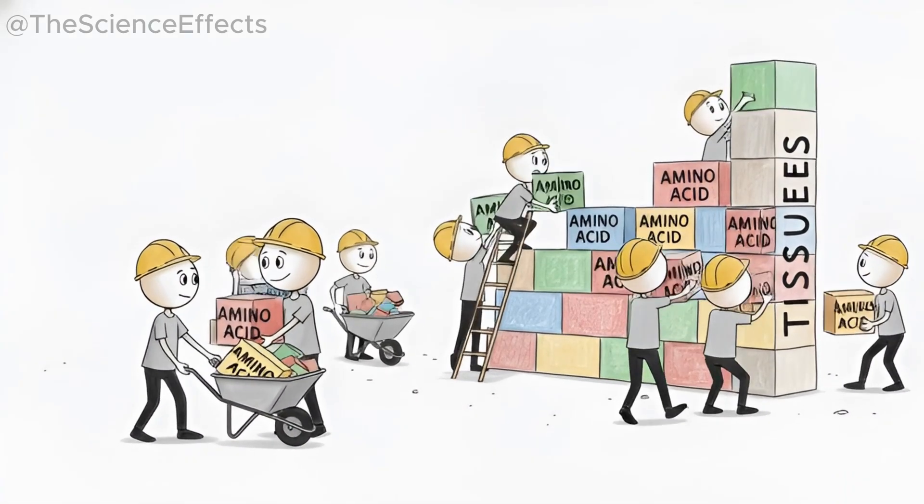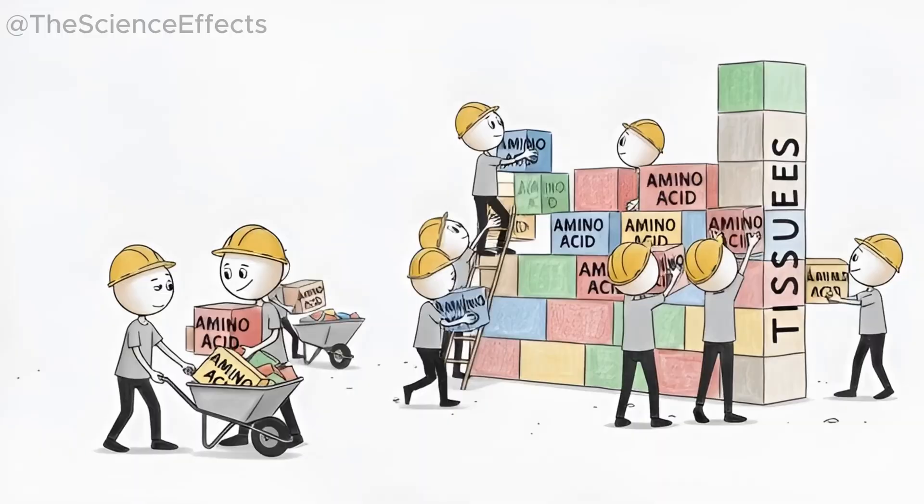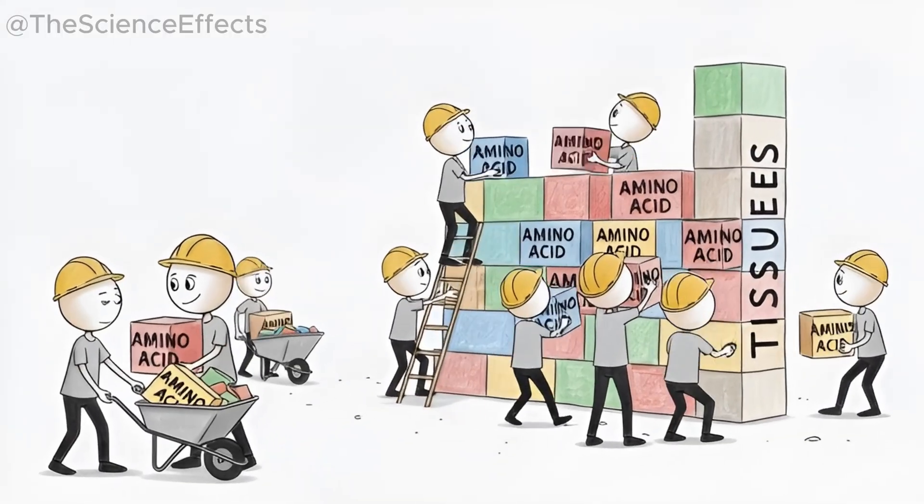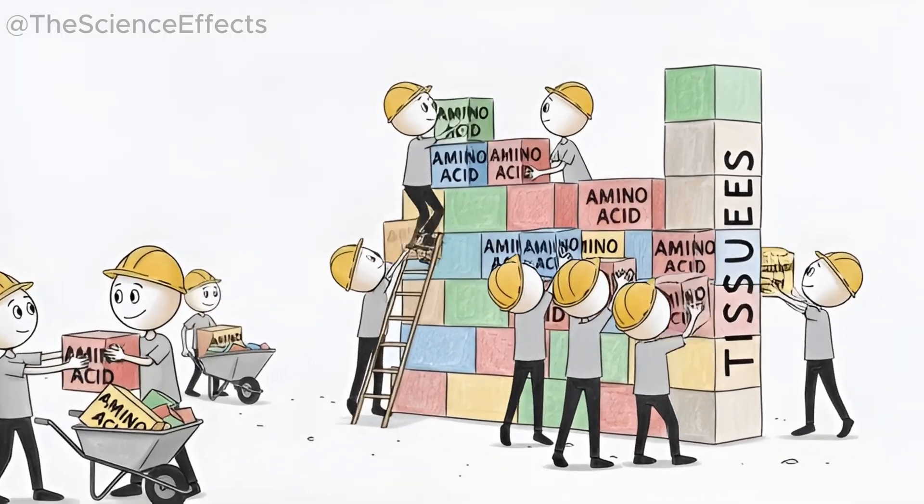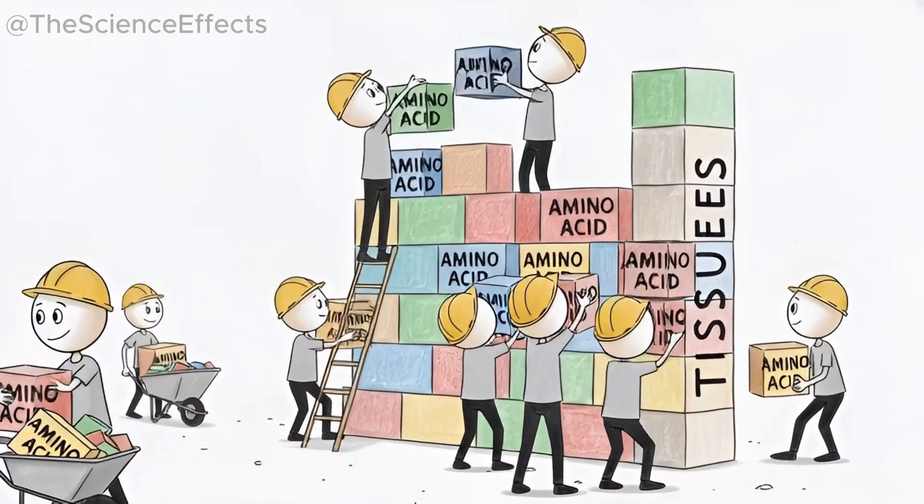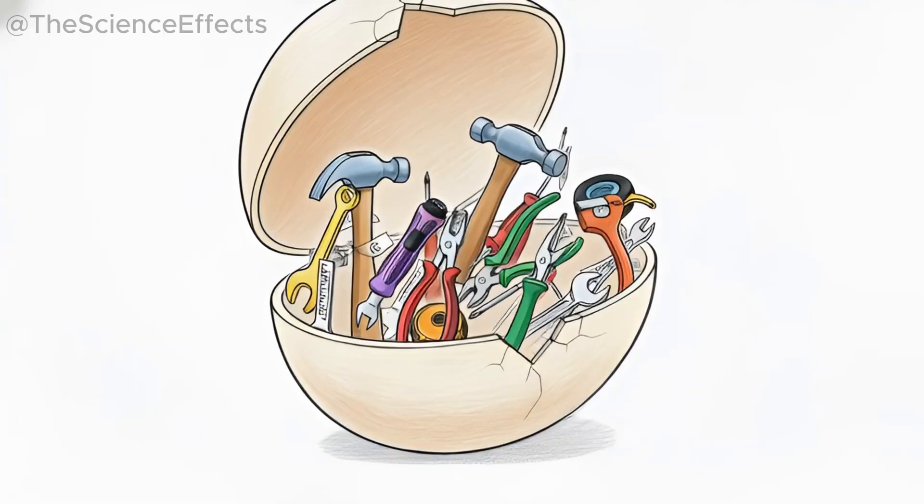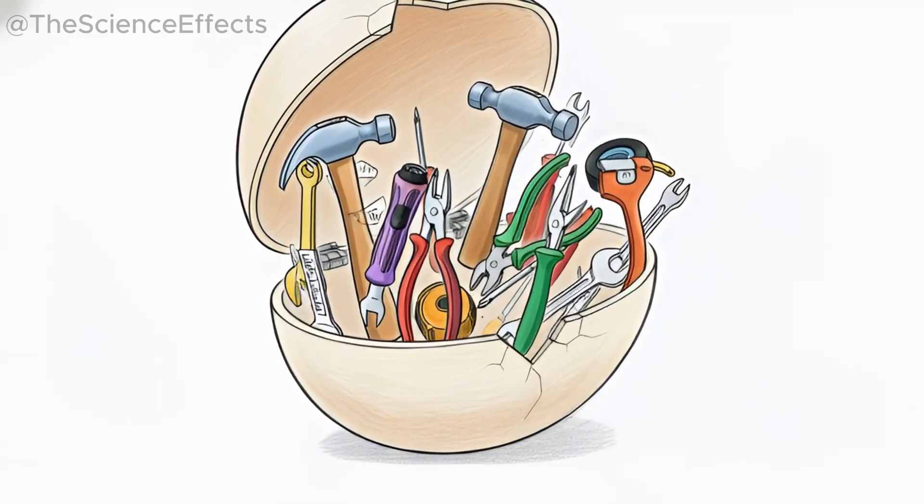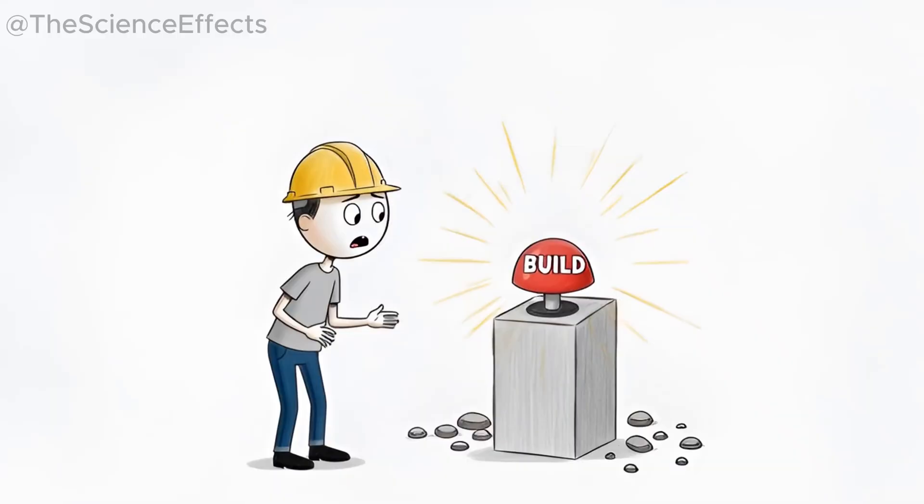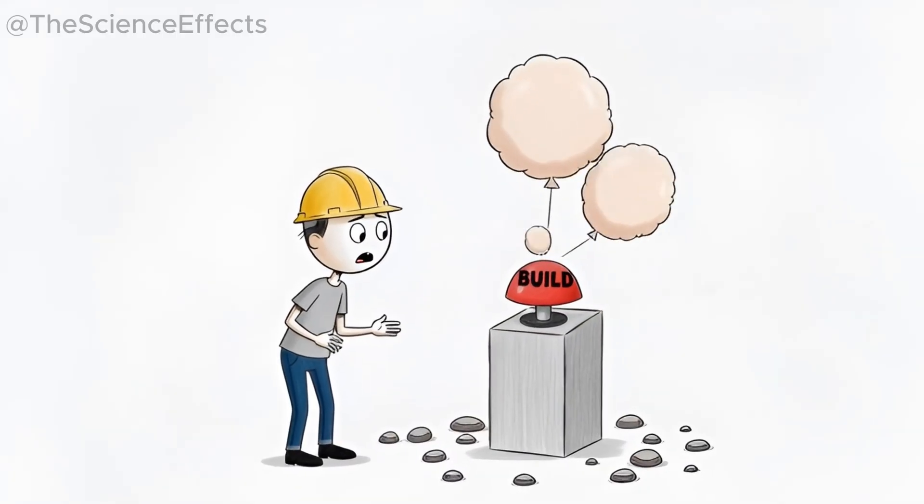Protein: the cellular construction crew. Protein is made of amino acids, the building blocks of muscle, enzymes, hormones, and tissues. Eggs contain all nine essential amino acids—that's rare. One of these amino acids, leucine, triggers muscle repair. It's like pressing a button that says 'build.' Your body listens.